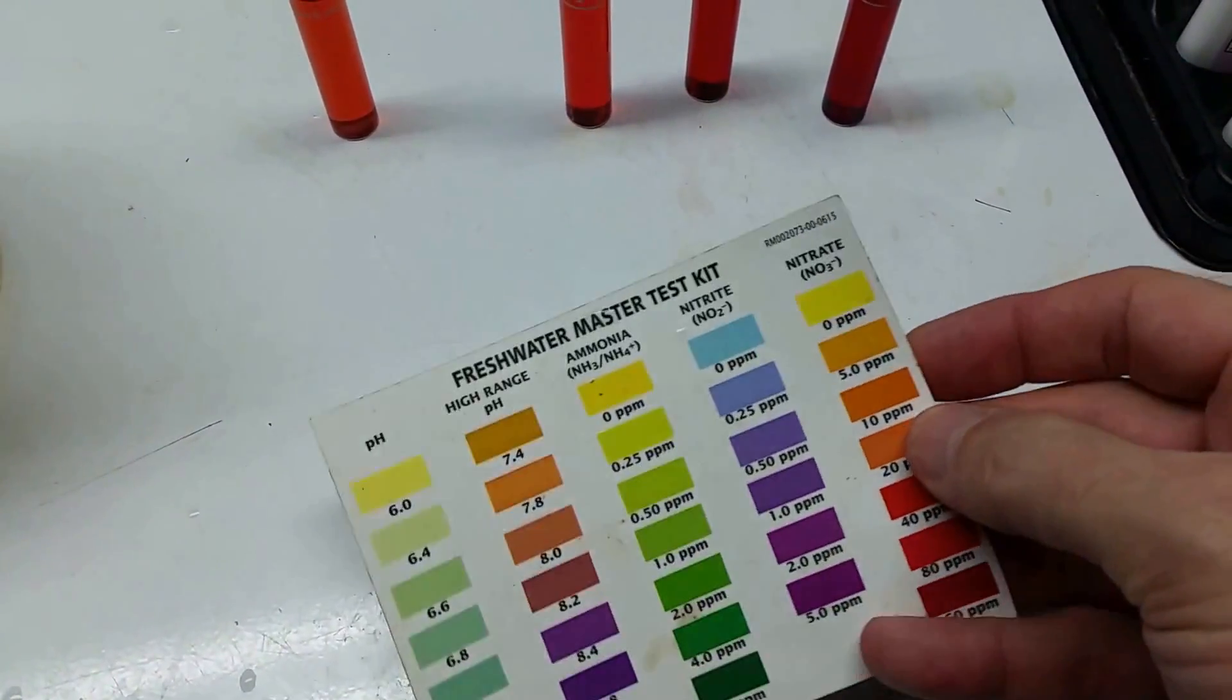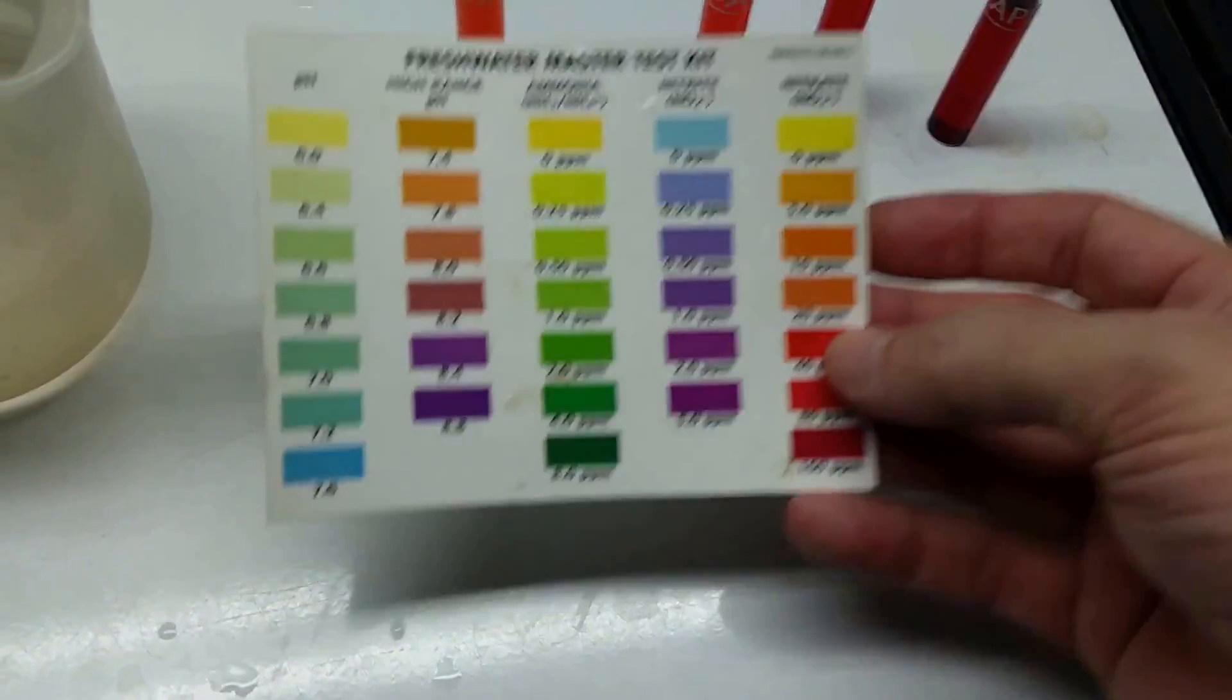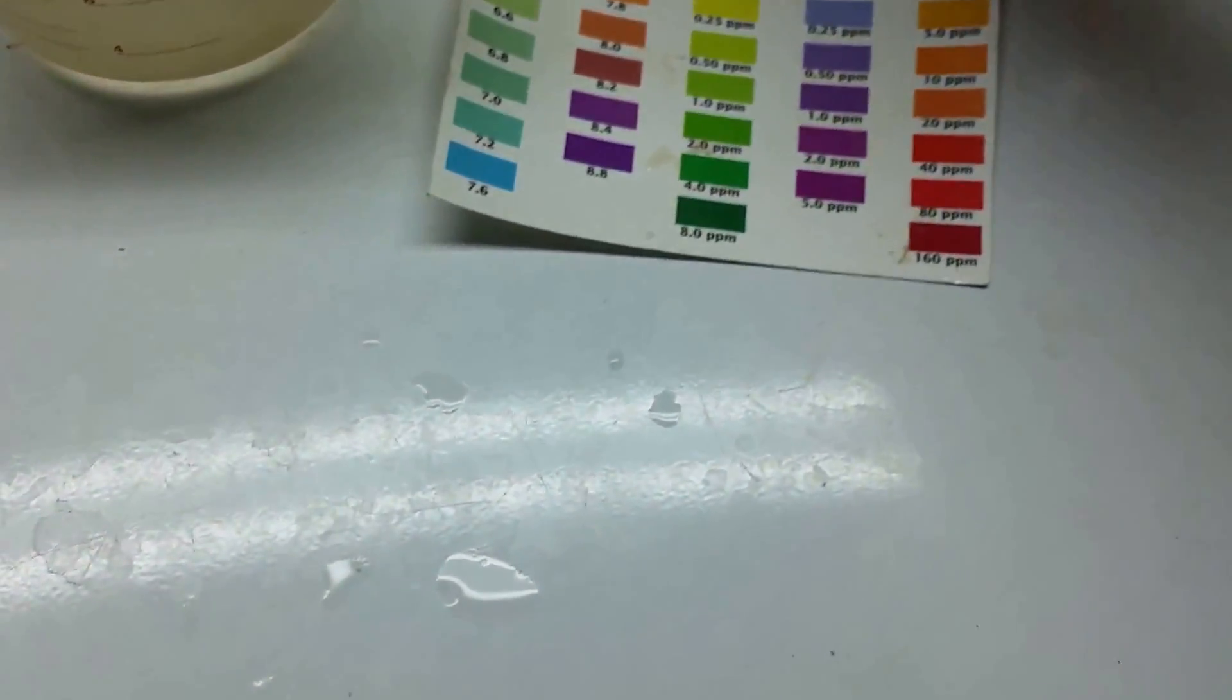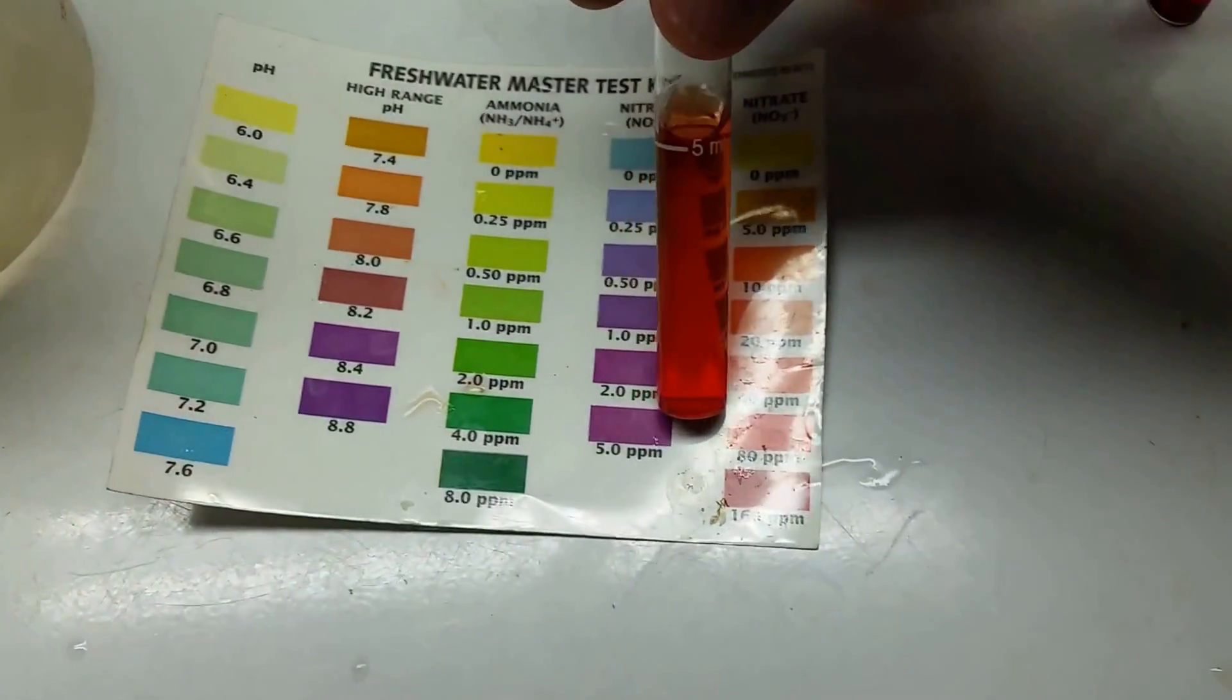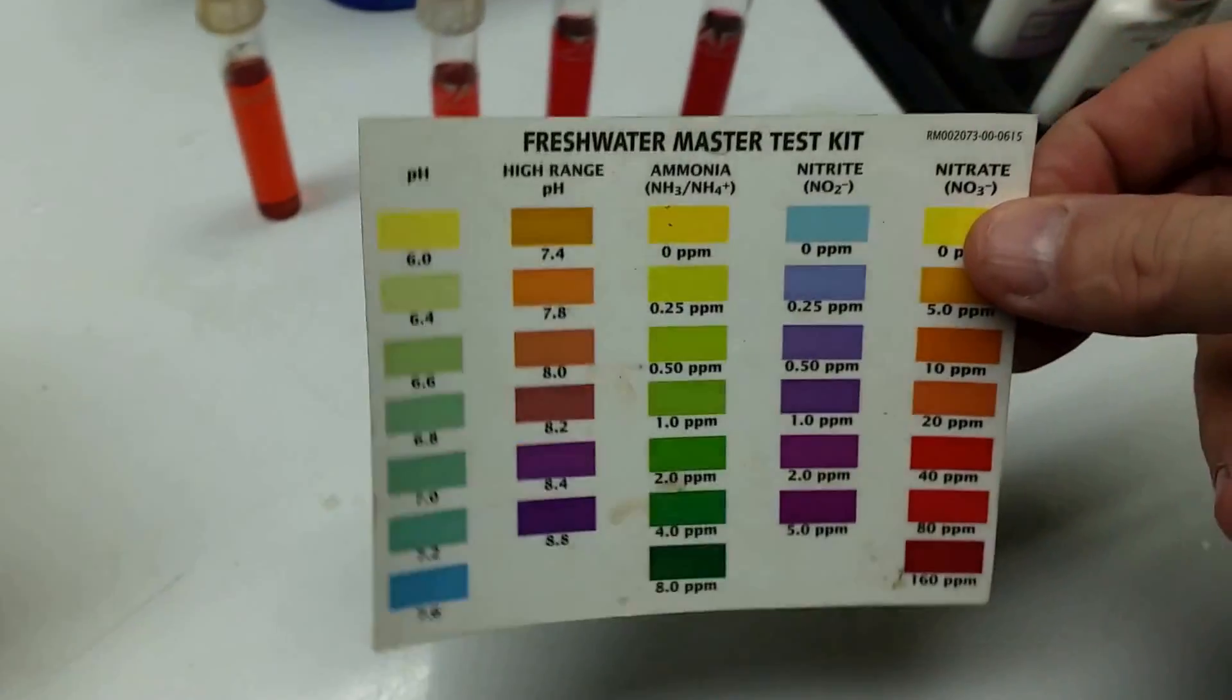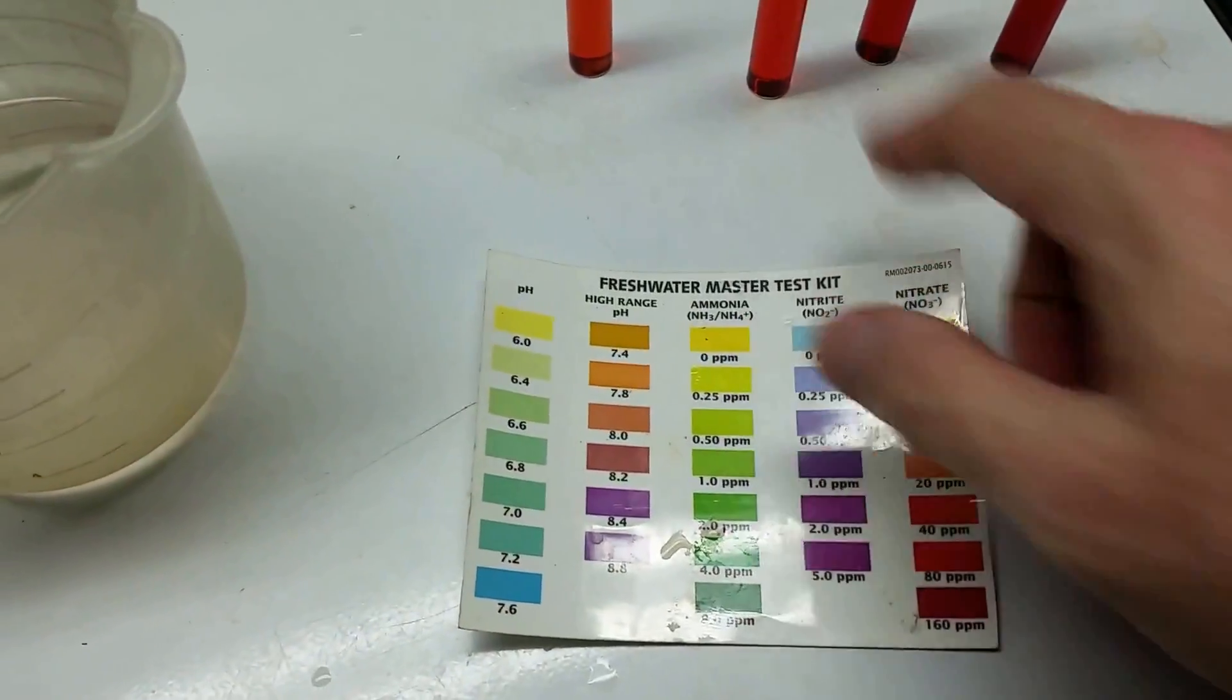When you actually put that on the chart and measure it, it only comes out at about 20 parts per million. Maybe it's kind of hard to see on video, but I looked at it up against the card properly in the light and I compared it to my black ghost knife fish tank.